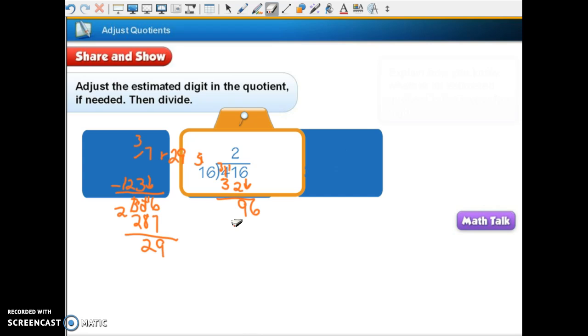So we're going to have to do 6. And 6 times 6 is 36, regroup the 3. 6 times 1 is 6 plus 3 is 9. And when I subtract, I get 0. So the answer is 26.